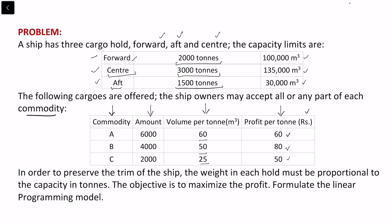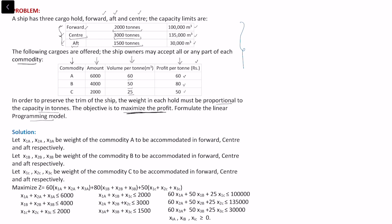To preserve the trim of the ship — meaning no wastage in storage — the weight in each hold must be proportional to the capacity in tons. The objective is to maximize profit while storing cargo. We first identify the decision variables. Each commodity A, B, and C can be stored in the forward, center, or aft hold, giving nine possible storage combinations.